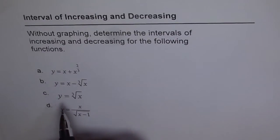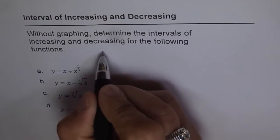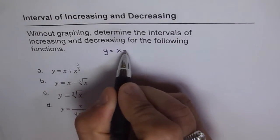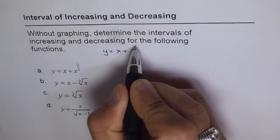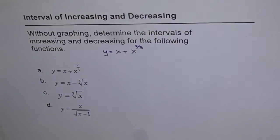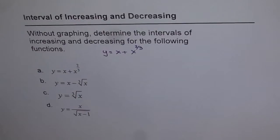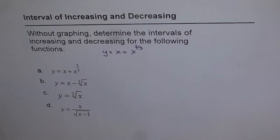Let me take the first one for you, which is y equals x plus x to the power of 2 over 3. As we did earlier, our policy is to find y dash, the derivative, and then figure out at which points is the derivative 0 or undefined, and then test for it being positive or negative. If the derivative is positive, the function is increasing. If the derivative is negative, the function is decreasing.